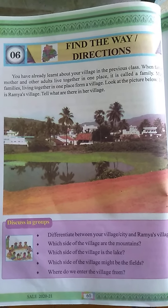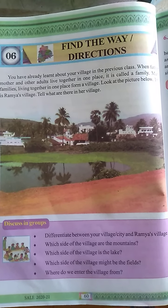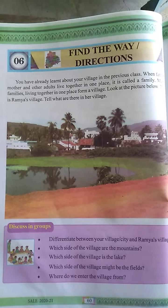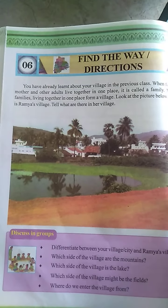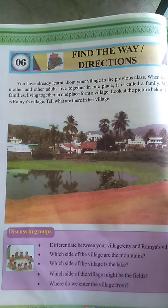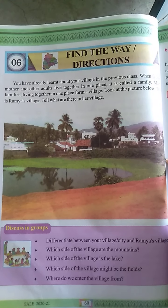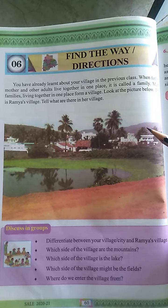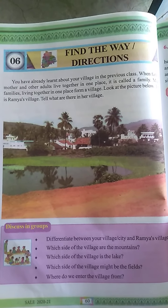Why am I showing you this picture? In our family, how many members live? Our parents, we, sometimes with our grandparents. We live with our grandparents - our grand family. So our grandparents, our parents and we, when we are living together in a house, it is called a family. Like that, some more families, when they live together or in one area, it forms a village. Now we are going to start the lesson.